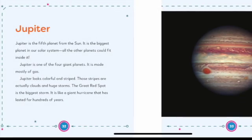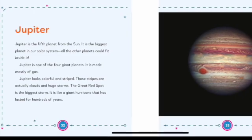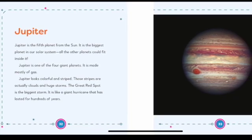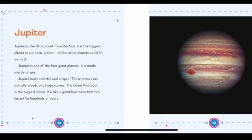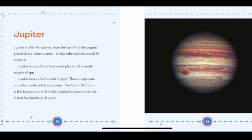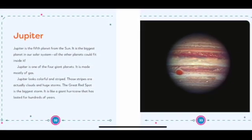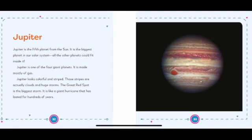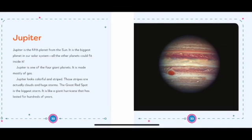Jupiter. Jupiter is the fifth planet from the Sun. It is the biggest planet in our solar system. All the other planets could fit inside it. Jupiter is one of the four giant planets. It is made mostly of gas. Jupiter looks colorful and striped. Those stripes are actually clouds and huge storms. The Great Red Spot is the biggest storm. It is like a giant hurricane that has lasted for hundreds of years.